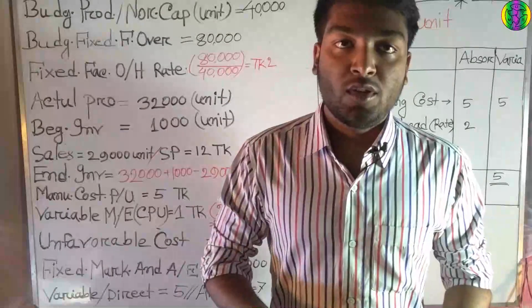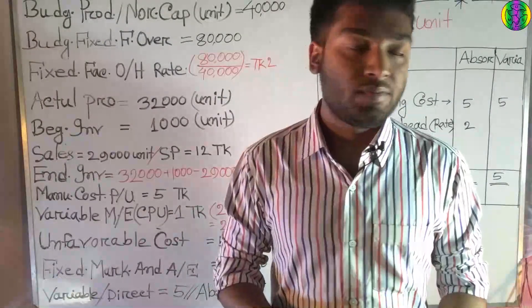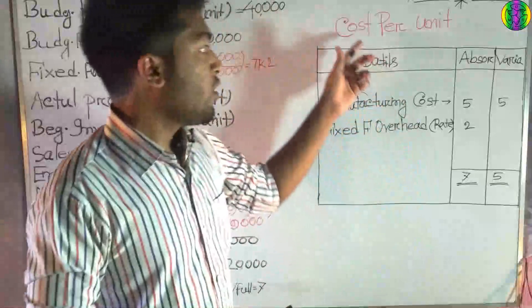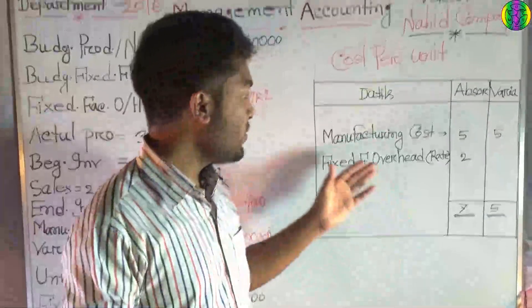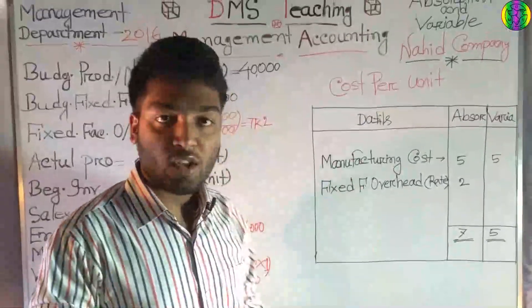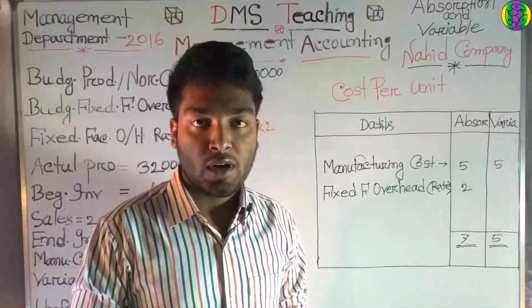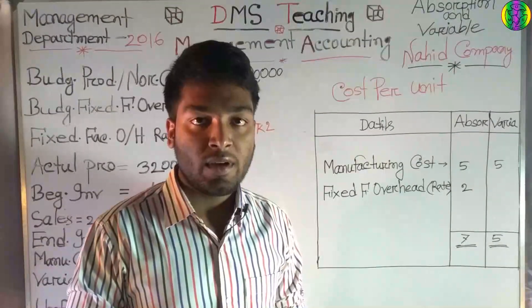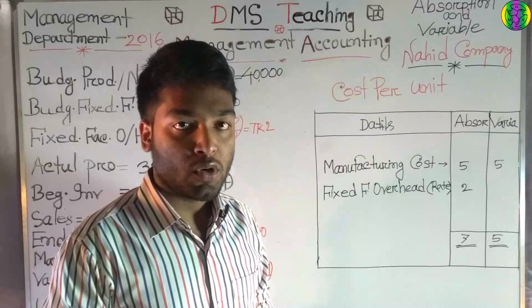We need to find the cost per unit. The manufacturing cost per unit will be considered under both methods. The cost of manufacturing is also known as the product cost per unit, and this forms the basis of our absorption and variable costing comparison.